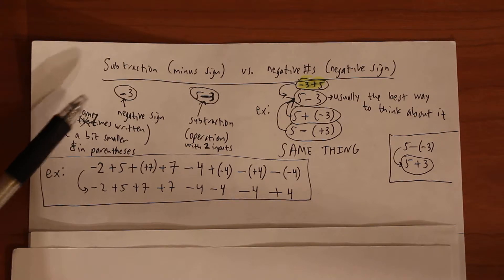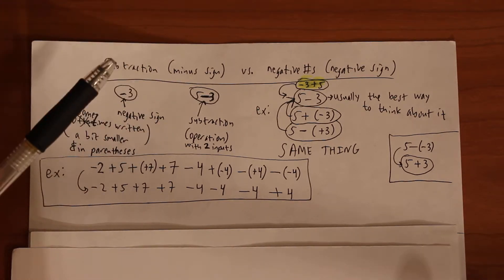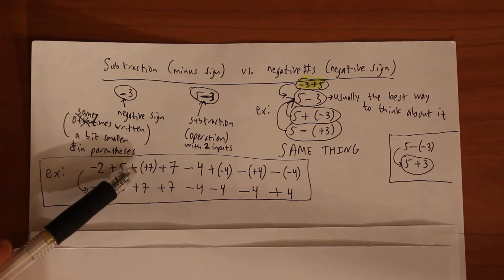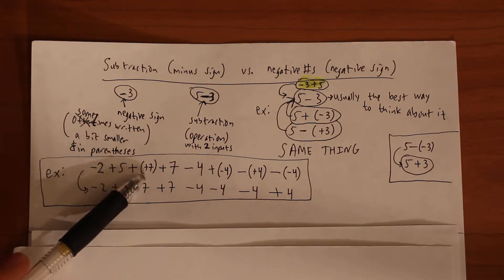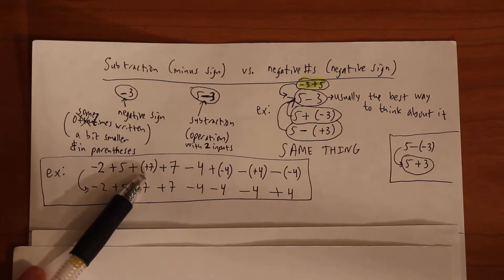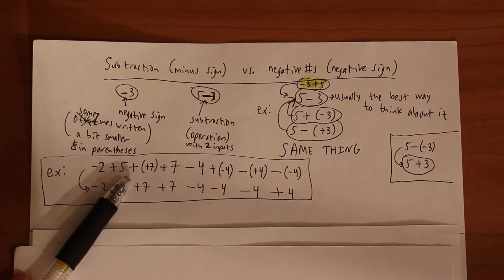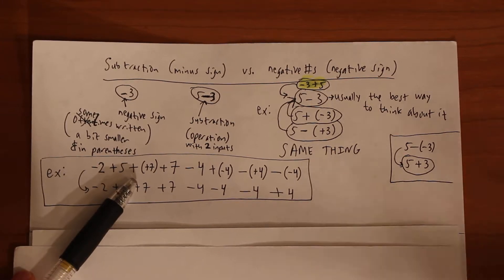So oftentimes a negative sign versus minus sign will be written the same way, but if you're writing it you may want to make, for example - I don't know if this is good or not but I like to make my signs a little bit smaller. So like my positive seven in parentheses here, my plus is a little smaller than that plus.